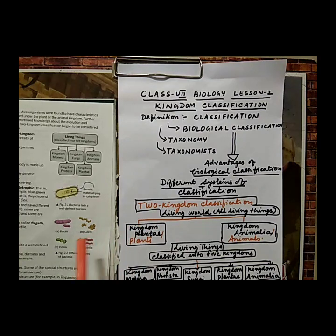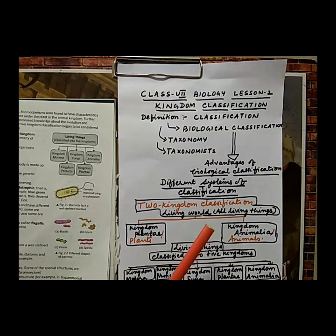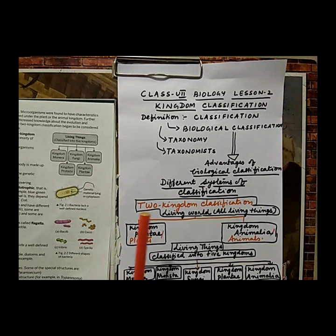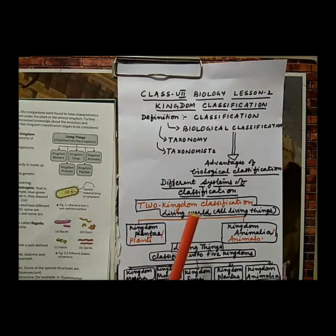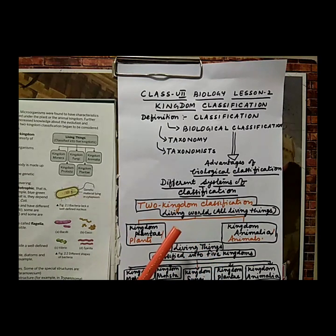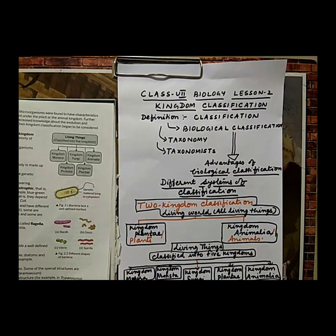The first category is kingdom Monera. They are completely unicellular — the body is made up of one cell with no well-defined nucleus. Cell wall is present, and they are autotrophic in nature, though in very rare cases heterotrophic organisms are also found. The best example is bacteria. Bacteria types include: rod-shaped bacteria called bacillus, spherical-shaped bacteria called cocci, spiral-shaped bacteria called spirilla, and comma-shaped bacteria called vibrio. Some bacteria also have flagella.